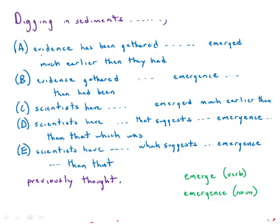So A and B begin with evidence, they're out right away. And C, D and E begin with scientists. So right away we're down to three answer choices.